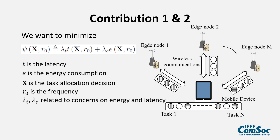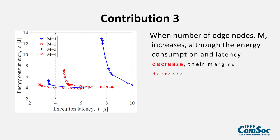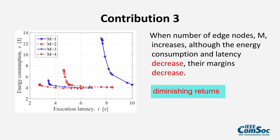After solving the optimization model, we observe that when the number of edge nodes increases, although the energy consumption and latency decrease, the margins decrease. This is a diminishing return phenomenon.